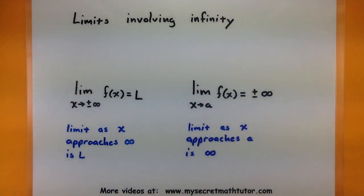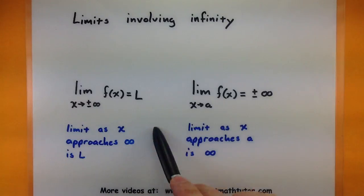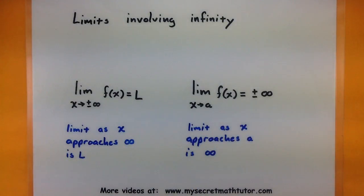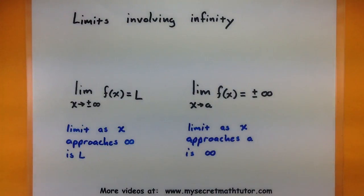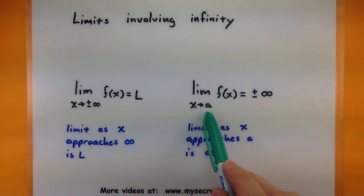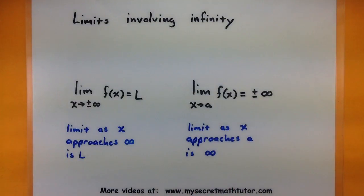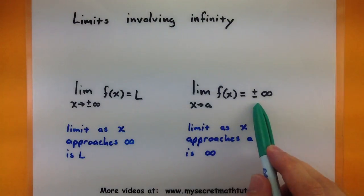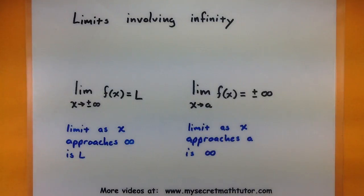Let's look at these one at a time. The first type of limit that could involve infinity is like this one on the left. The way we interpret this is that x is actually approaching infinity or possibly negative infinity — so we'd say the limit as x approaches infinity is L. On the other hand, we might have a limit where x is approaching a value like it normally would, but the value of the function is growing arbitrarily large, or arbitrarily large and negative, going to positive or negative infinity. We'd say the limit as x approaches A is infinity.